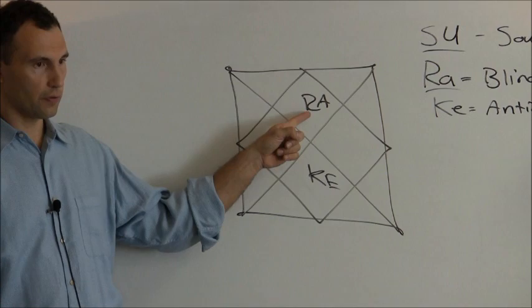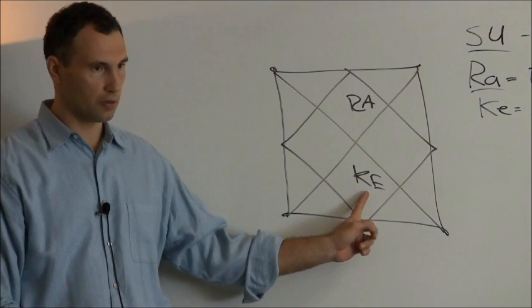So if we count from Rahu, counting inclusively, we count 1, 2, 3, 4, 5, 6, 7, and Ketu is there.